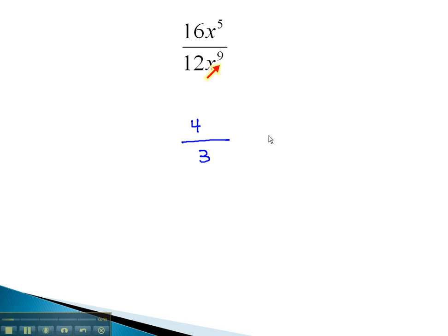As for the variables, we could subtract the variables 5 minus 9 to get negative 4. Because the exponent is negative, that means the x's must move to the denominator, making it x to the positive 4. This rational expression, made up of monomials, simplified to 4 over 3x to the 4th.